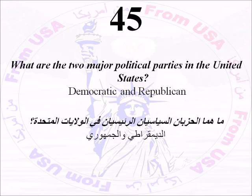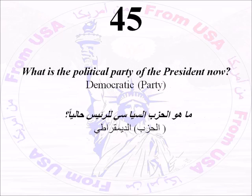Number Forty-Five: What are the two major political parties in the United States? Democratic and Republican. Number Forty-Six: What is the political party of the president now? Democratic. The president, Barack Obama, belongs to the Democratic Party.